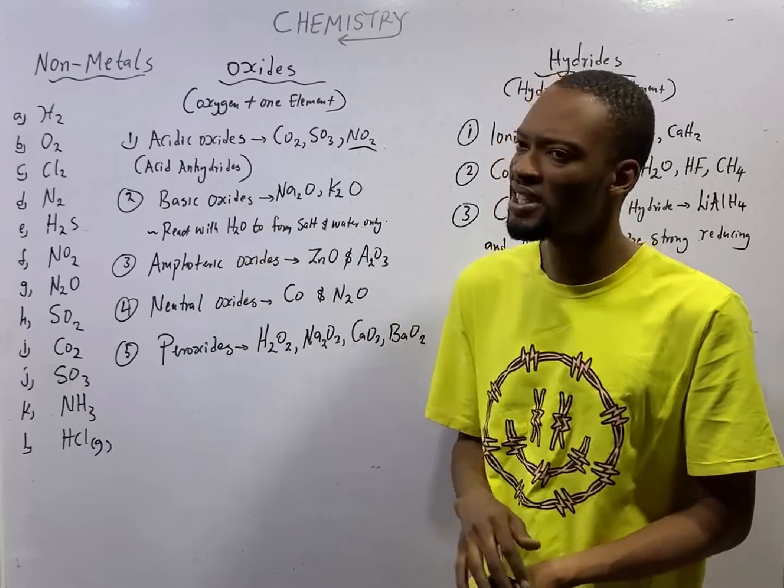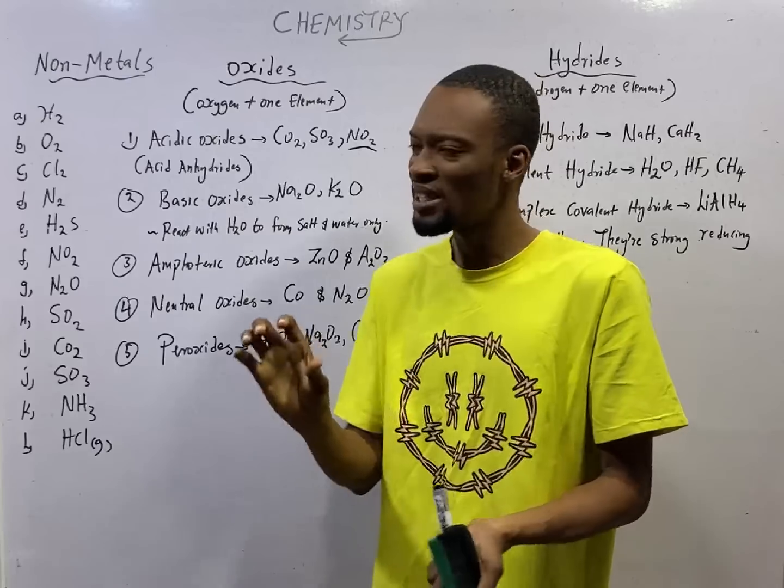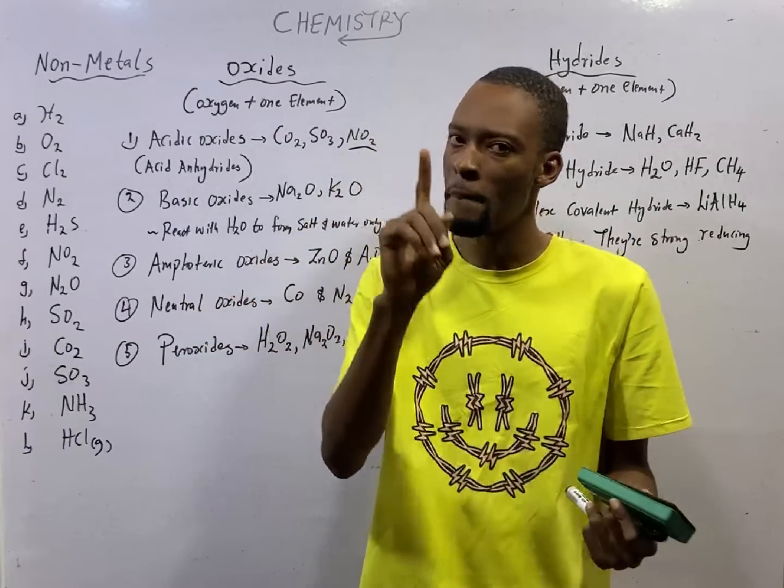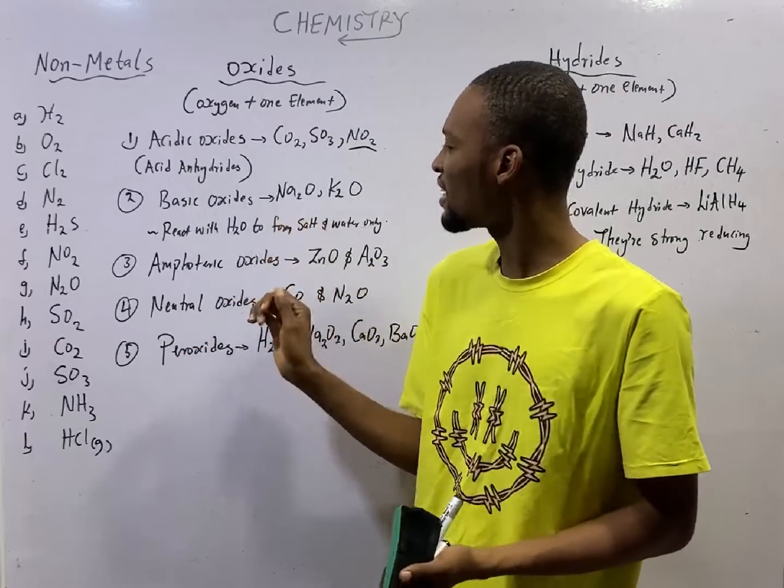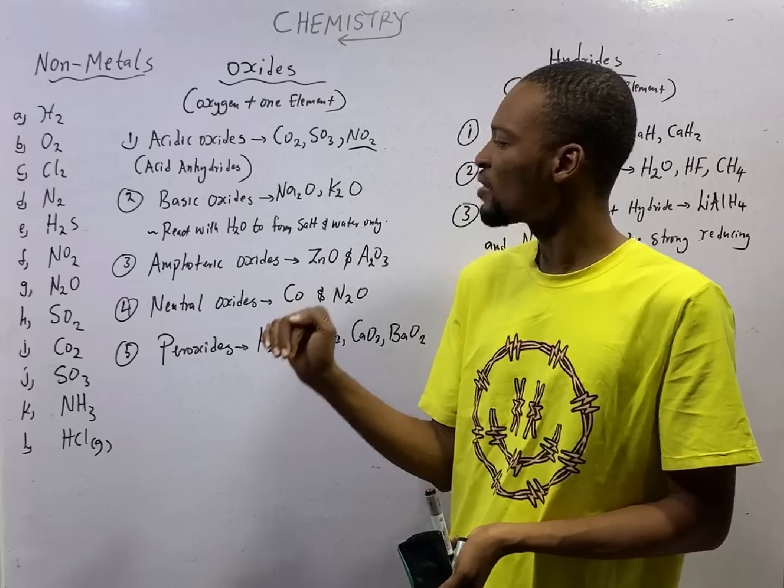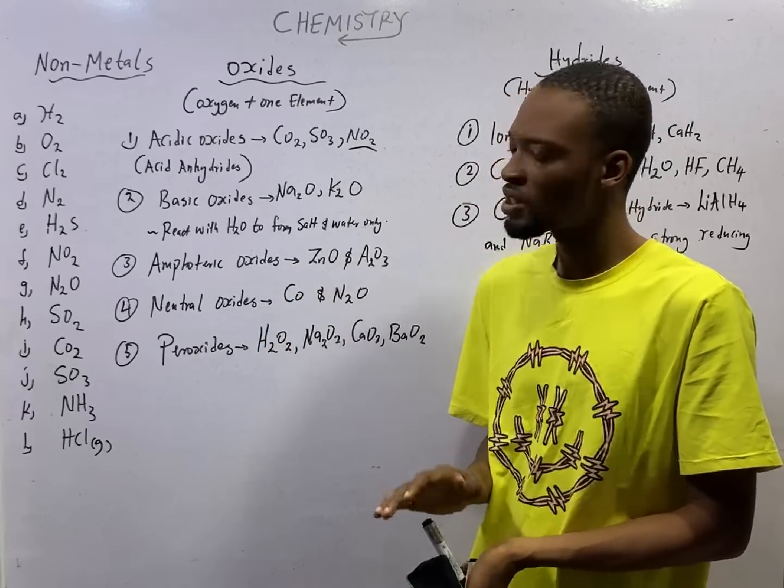Number two, basic oxides. Basic oxides are generally the oxides of metals. Examples, sodium oxide and potassium oxide. Basic oxides will react with water to form salt and water only.